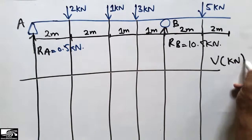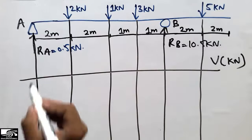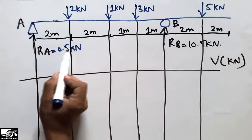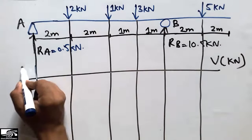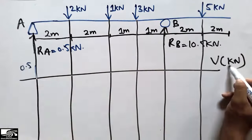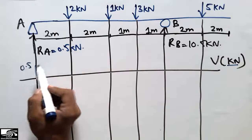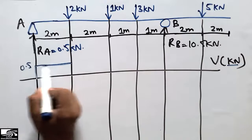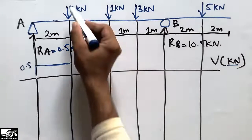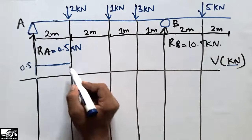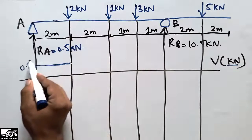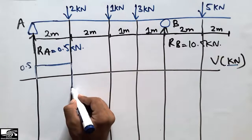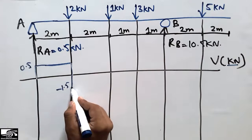Starting the shear force from the left side: RA = 0.5 kN acts upward, so we move up to 0.5 kN. There is no load in between, so we move along the zero-degree line. Then 2 kN acts downward, so we subtract: 0.5 − 2 = −1.5 kN.